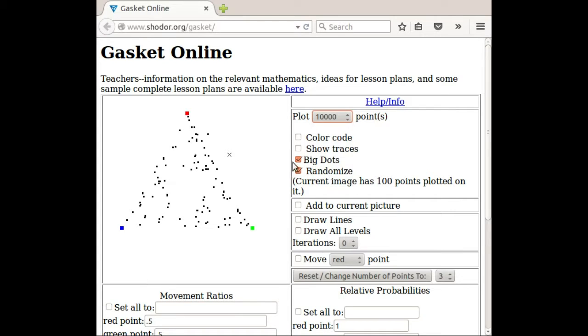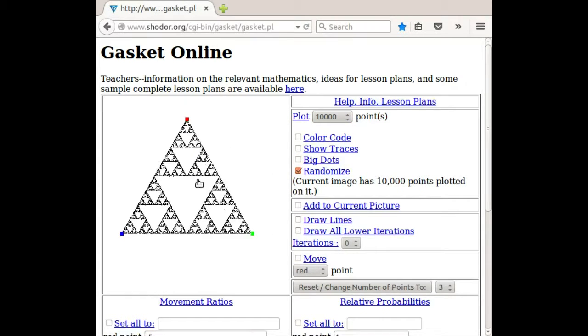And let's start going back to what we did previously. So 10,000 points with some small dots.